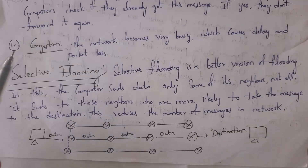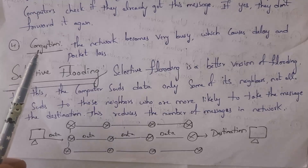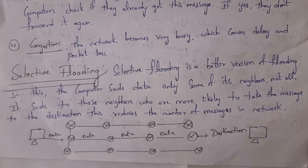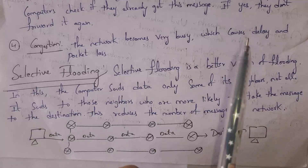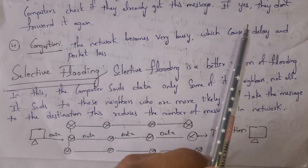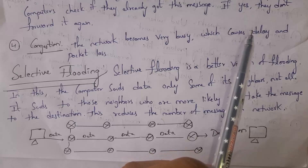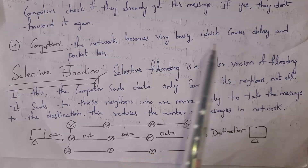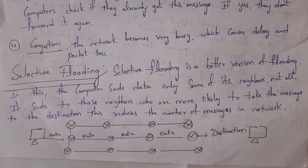The fourth disadvantage is congestion. Congestion means high traffic in the network. As each router keeps sending data to their neighbors, traffic becomes very high, causing delays in data transfer and sometimes complete data loss.